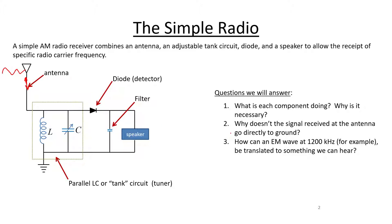And lastly, how can an electromagnetic wave at 1200 kilohertz, for example, just to pick a number, be translated into something that we can hear? And that's a big question that's basically asking, how does this radio receiver work? And once we put all the elements together, we will answer that question as well.